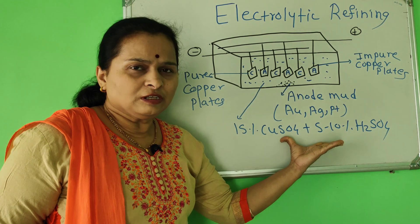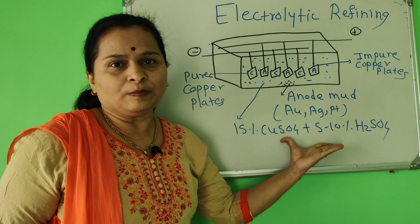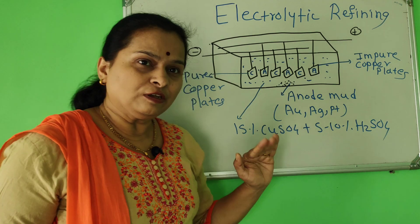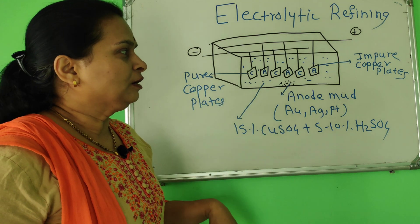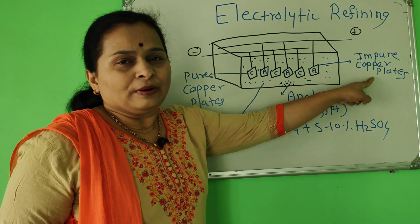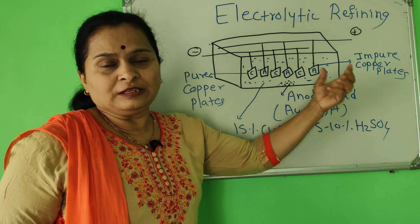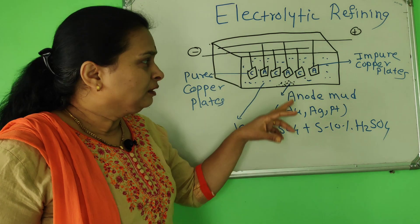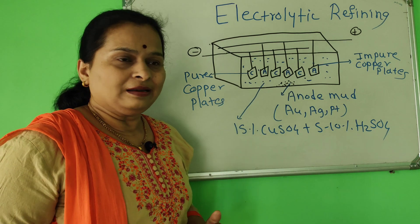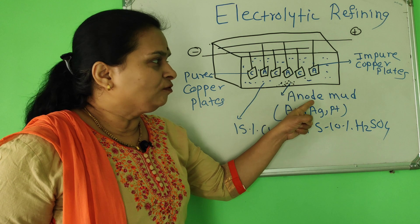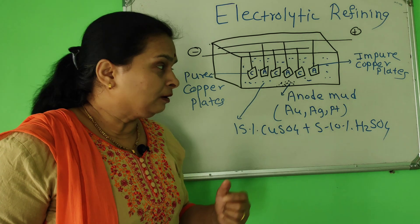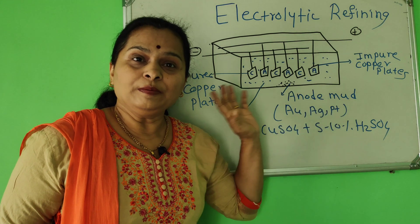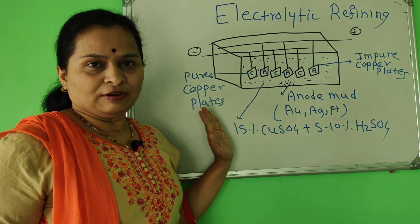This concentration is very important for MCQ-type questions: 15% copper sulfate solution and 5 to 10% H2SO4. The impure copper plates — that means blister copper plates — get dissolved into the solution when electric current passes. Impurities are collected at the bottom of the tank in the form of anode mud, which contains gold, silver and platinum impurities. This is electrolytic refining.